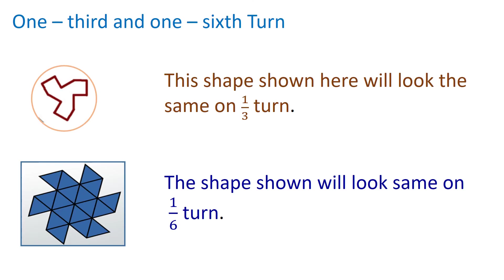One-third and one-sixth turn. Any shape having three tips will make a one-third turn when it moves from one tip to the other, and this shape will look the same on a one-third turn and also on a one-sixth turn. In the second picture, it has six tips — when it moves from one tip to the other, it makes a turn of one-sixth, so the shape will look the same on a one-sixth turn. Children, we have come to the end of this revision session. Revise thoroughly. Take care and bye.